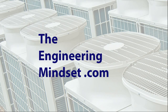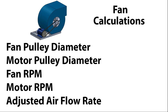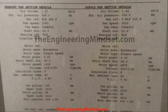Hey there guys, Paul here from TheEngineeringMindset.com. In this video we're going to be doing some fan calculations and we're going to see how to calculate the fan pulley diameter, the motor pulley diameter, the fan revolutions per minute, the motor revolutions per minute, and also what the adjusted airflow rate would be if we were to change these. Now with the fan, if it's already installed, then you should get a sheet that looks something like this, which tells you the design data.